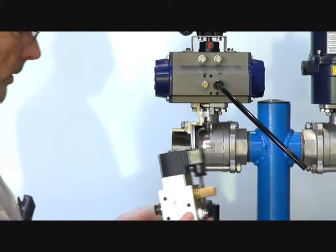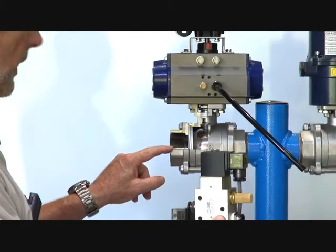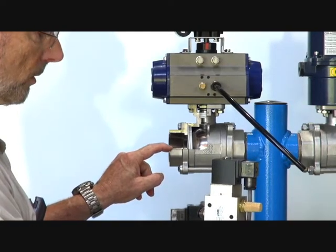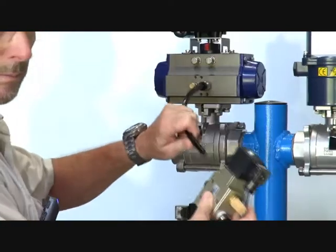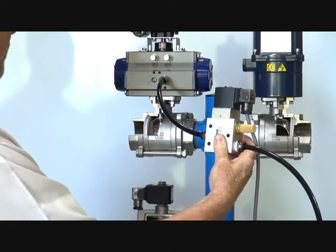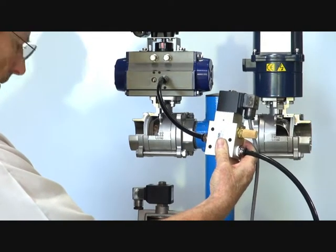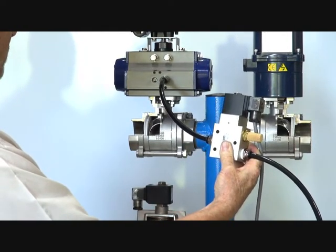I'm going to demonstrate this unit by piping it up to this spring return pneumatic actuator to show the function. The actuator is piped up to demonstrate the 3.2 valve. I'll just energize it and the actuator operates.